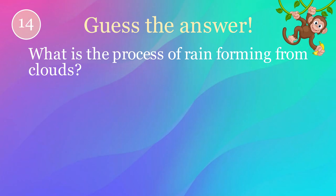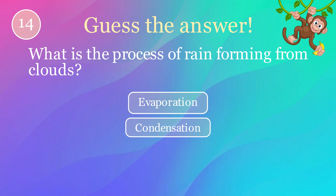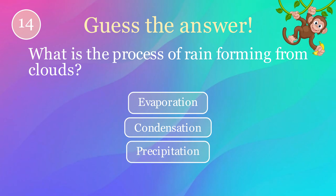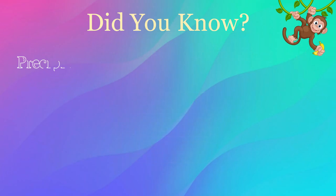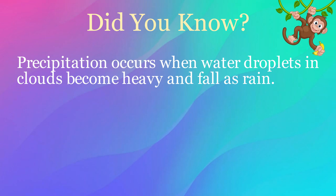What is the process of rain forming from clouds? Options: evaporation, condensation, precipitation. The correct answer is precipitation. Here's an interesting fact: precipitation occurs when water droplets in clouds become heavy and fall as rain.